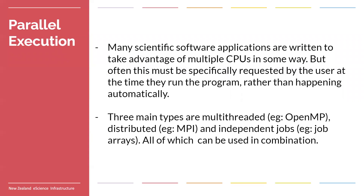Generally if you're coming onto the high performance computers, you want to do some form of parallelization. Most scientific software is able to utilize different forms of parallelization. On the platforms, the three main types you'll see are multi-thread (OpenMP), distributed (MPI), and independent jobs and job arrays. Job arrays aren't really a form of parallelization — they're doing the same thing many times — but they are tangentially related and very useful.